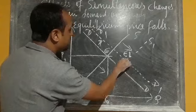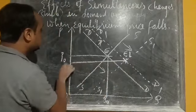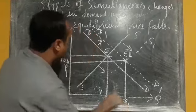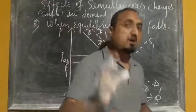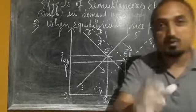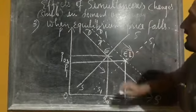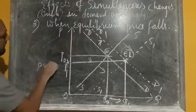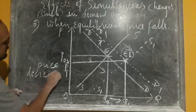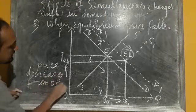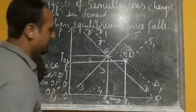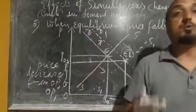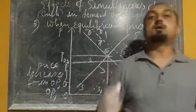At E1, drawing a line to the price axis, we can see that price is decreasing while quantity demand is increasing from OQ0 to OQ1. If supply changes by a greater amount and demand changes by a smaller amount, we get a new equilibrium point E1 where price falls from OP0 to OP1, but quantity increases from OQ0 to OQ1. These are the three possibilities that take place when demand and supply change simultaneously.